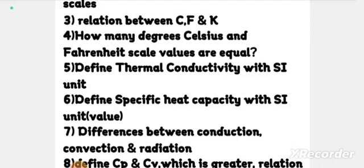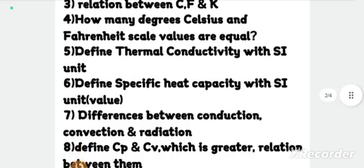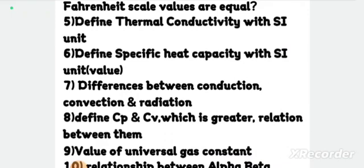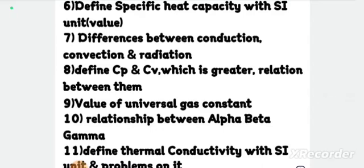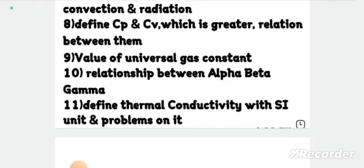The next question is: how many modes of heat transfer are there, and explain them. Also define Cp and Cv — which is greater, Cp or Cv, and what is the relation between them? Next: what is the value of the universal gas constant R? And the relationship between alpha, beta, and gamma — very, very important.